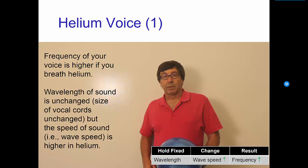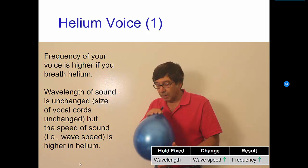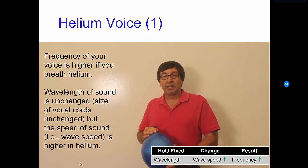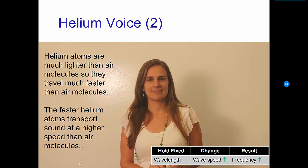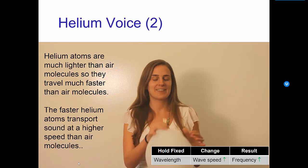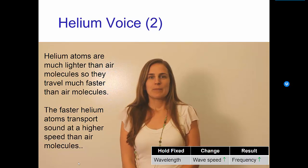Here's another example of holding the wavelength fixed, but increasing the wave speed and getting an increasing frequency. In this case, the wavelength is determined by my vocal cords. And I'm going to increase the wave speed by breathing helium. Okay, so this is my normal voice. And this is my voice after breathing helium. You notice the difference. The wave speed changes because the speed of sound in helium is higher than in ordinary air. Let's hear another example. Hello. I'm Dr. Paul. This is what my normal voice sounds like. And this is what my voice sounds like on helium.